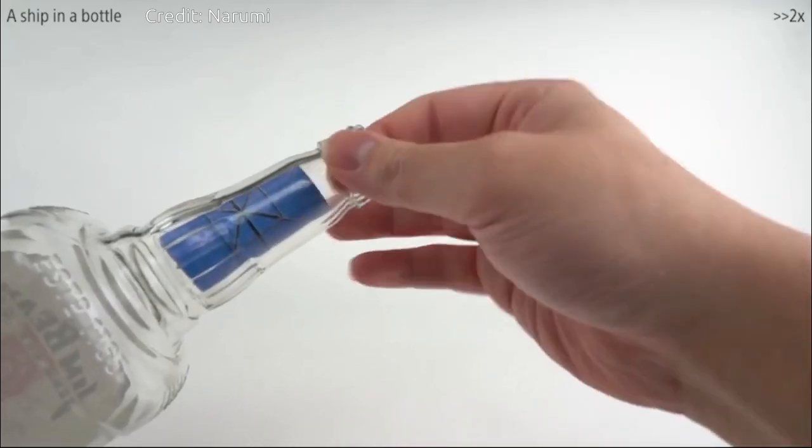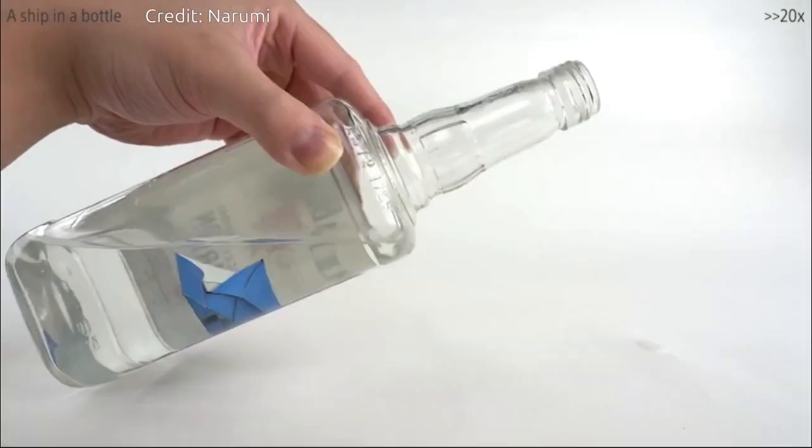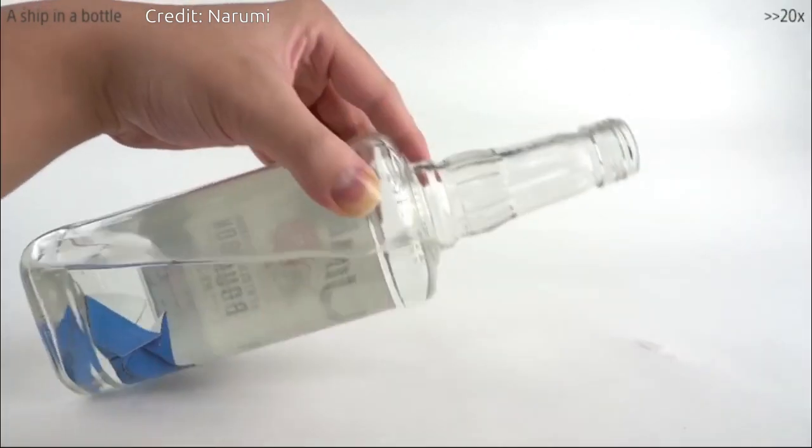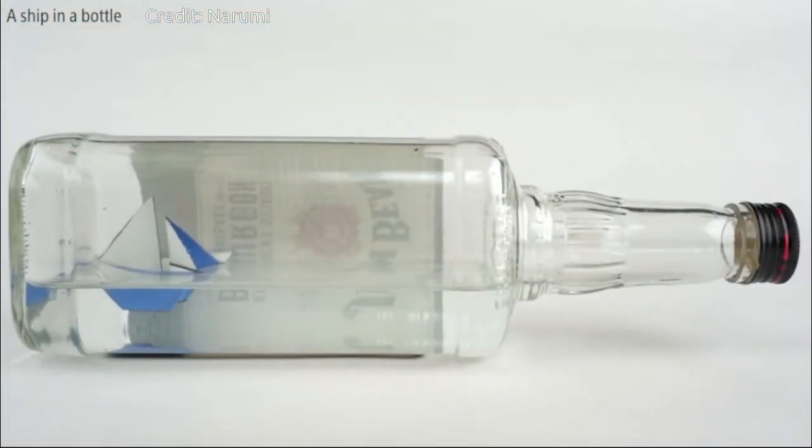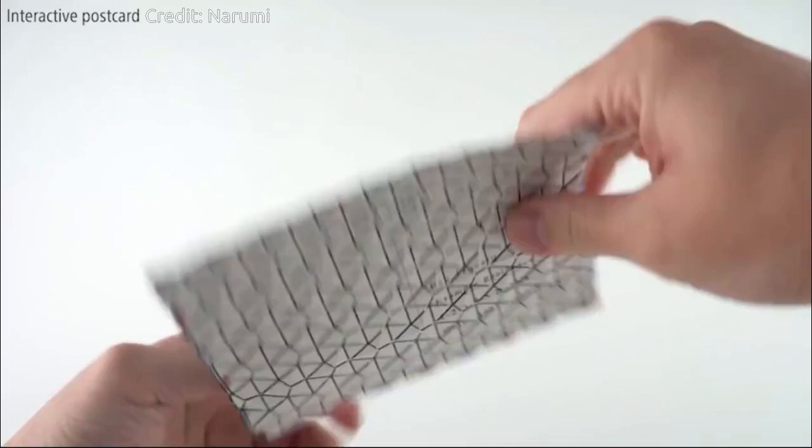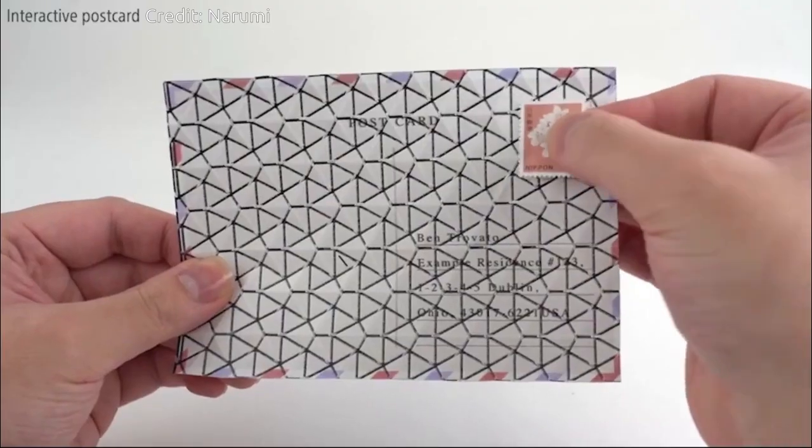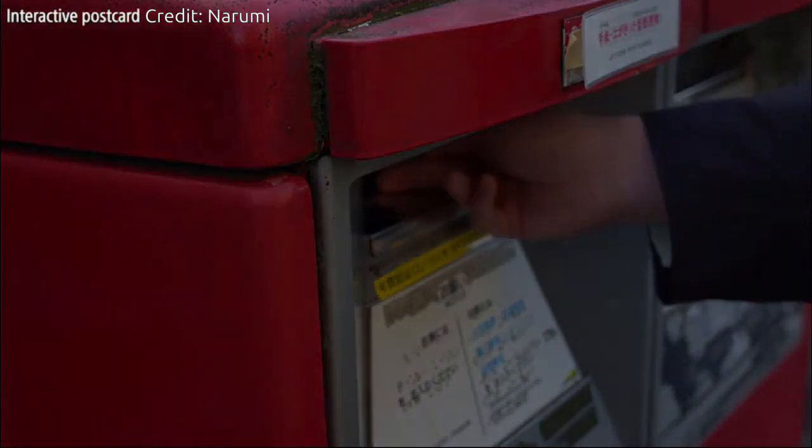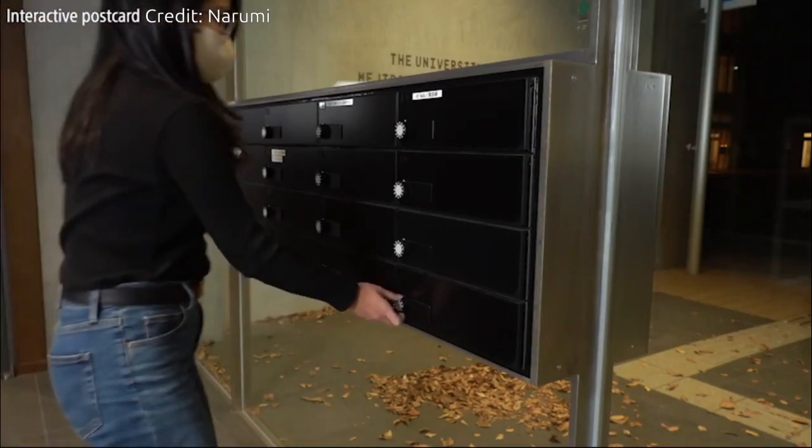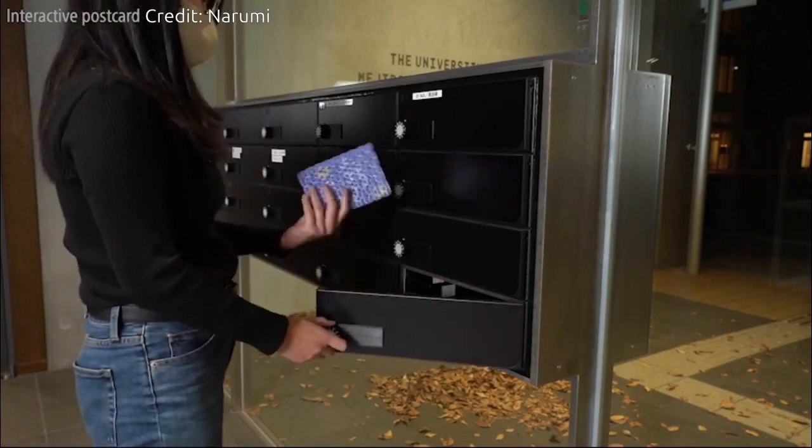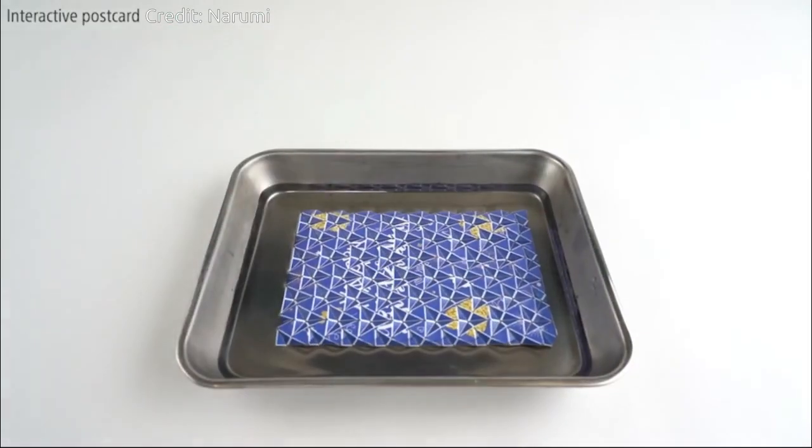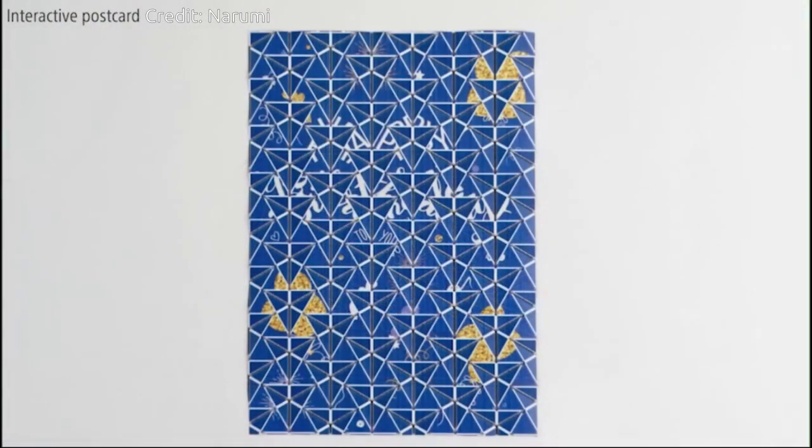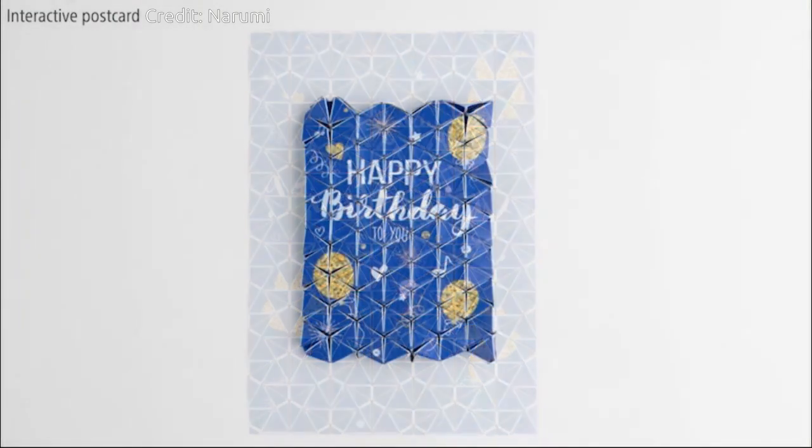This printer prints a 2D origami design onto both sides of a plastic sheet that shrinks with heat. The ink it uses doesn't shrink and can stay flexible when dry. As the base sheet shrinks when heated and the ink resists the shrinking, by leaving gaps between sections of ink on one side or the other, the designer can control which way a certain section of the sheet folds.